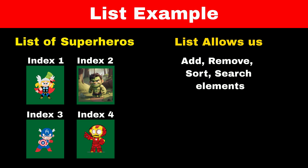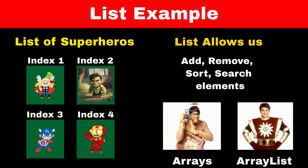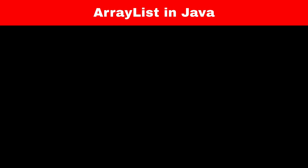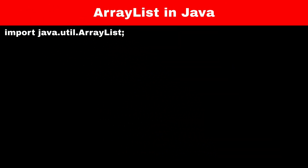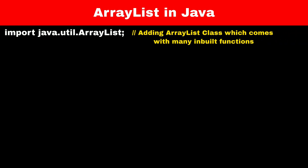List is like Arrays, but it is much more powerful than Array. We can implement a List in Java using the ArrayList class, which is present in the java.util package. When we want to use a List, we import the ArrayList class from this special package called java.util. This package has tools that help us do things easily.